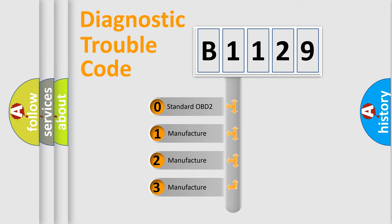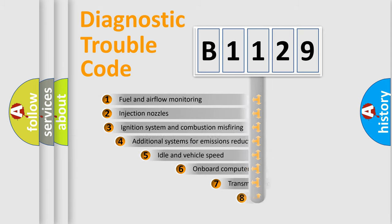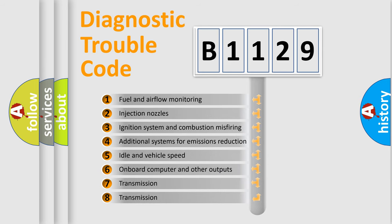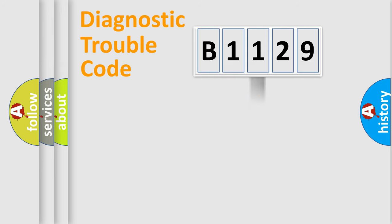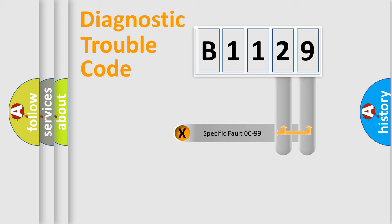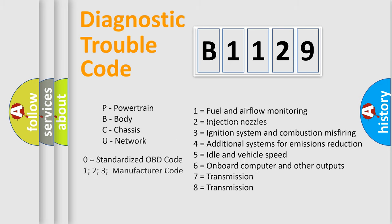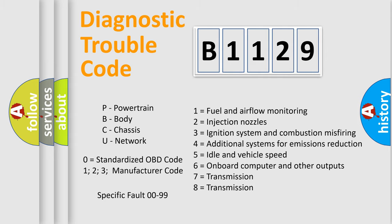If the second character is expressed as zero, it is a standardized error. In the case of numbers 1, 2, or 3, it is a more manufacturer-specific expression of the car-specific error. The third character specifies a subset of errors. This distribution is valid only for the standardized DTC code, and only the last two characters define the specific fault of the group. Such a division is valid only if the second character is expressed by the number zero.